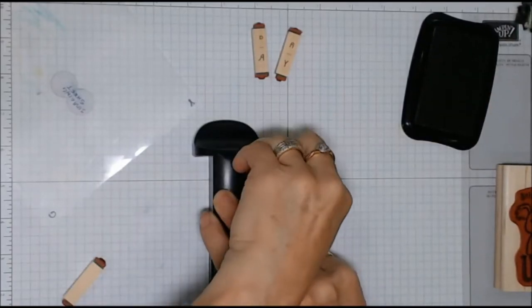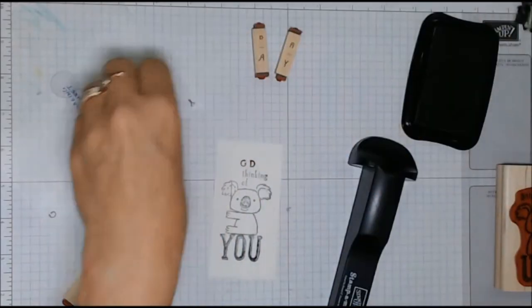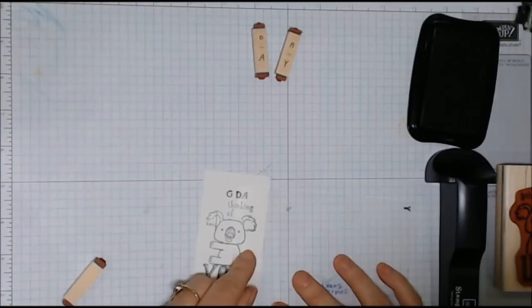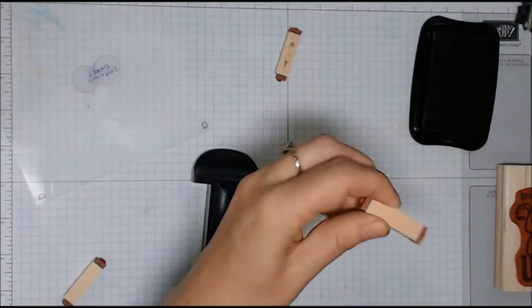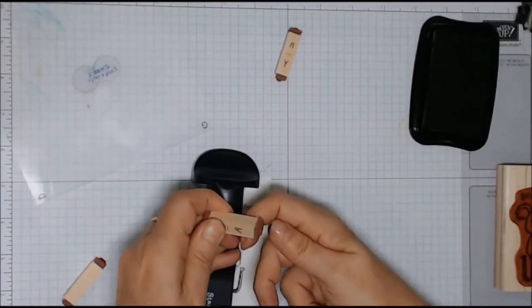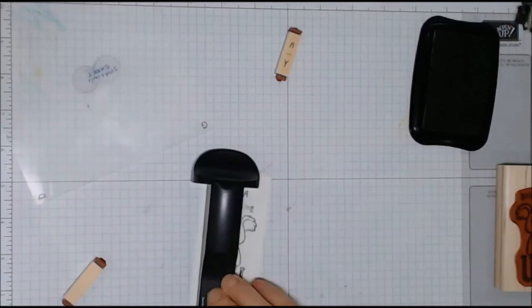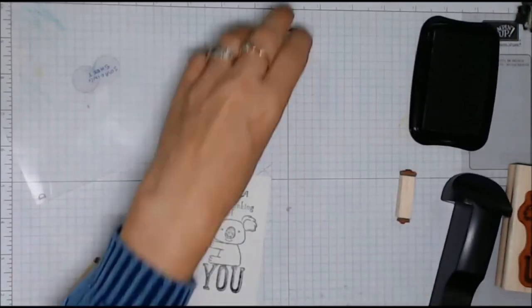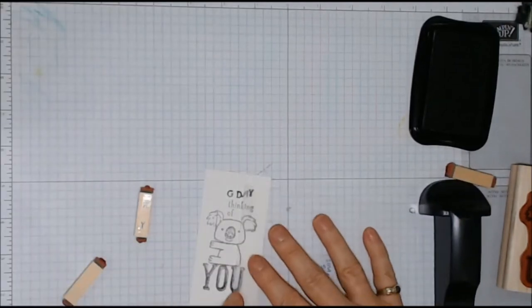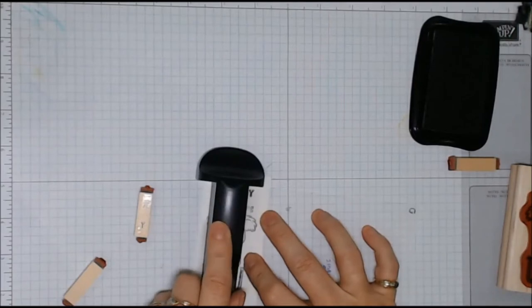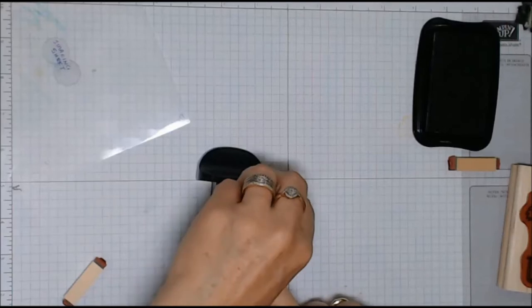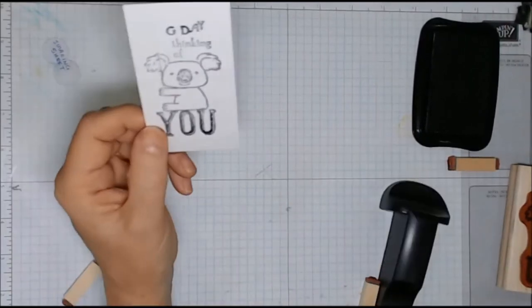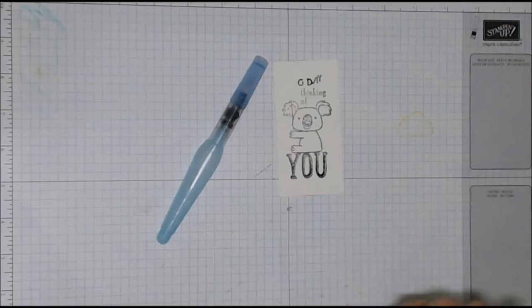When you greet somebody with the word G'day, your voice rises at the end of the sentence. There's a little inflection there. So I want the A and the Y to rise up away from the D as well. You'll see I'm putting them on a slant so they slope upwards, which is kind of how the greeting sounds when you say it to somebody. Putting the Y higher again, and stamping that down. G'day, thinking of you. There's our little greeting.